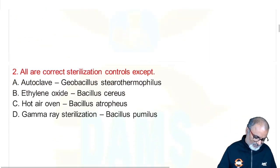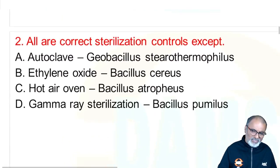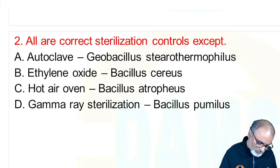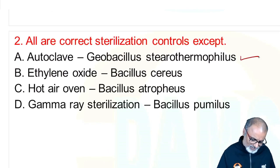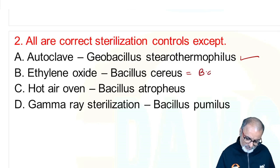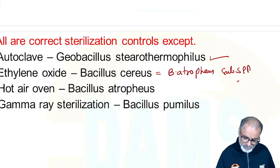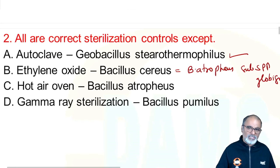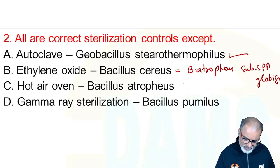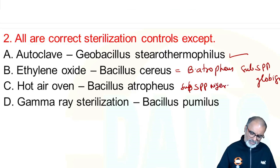Next question: all are correct sterilization controls except autoclave — Geobacillus stearothermophilus. Ethylene oxide — Bacillus atrophaeus. Gamma rays — Bacillus pumilus. You must know all quality control agents.